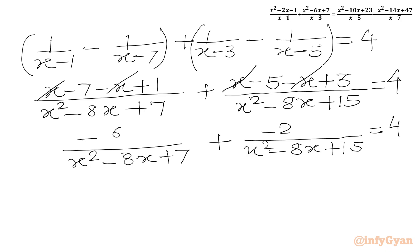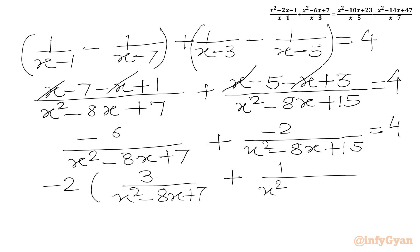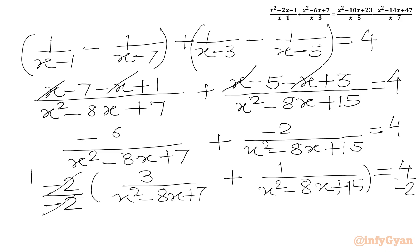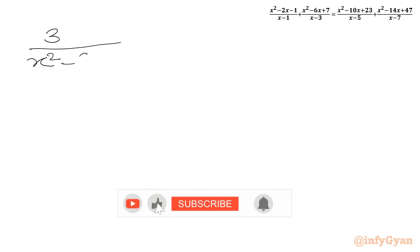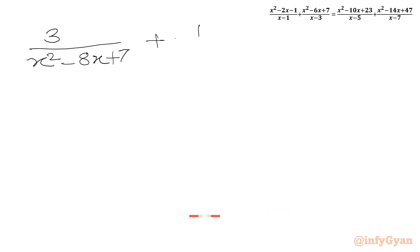We take minus 2 common from the LHS to get: minus 2 times [3 over (x squared minus 8x plus 7) plus 1 over (x squared minus 8x plus 15)] equals 4. Dividing both sides by negative 2 gives: 3 over (x squared minus 8x plus 7) plus 1 over (x squared minus 8x plus 15) equals negative 2.